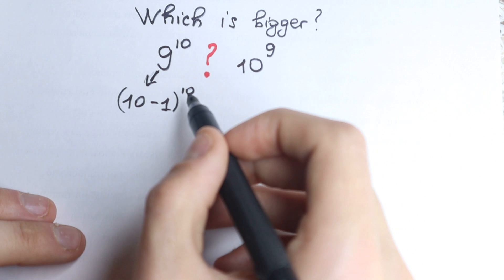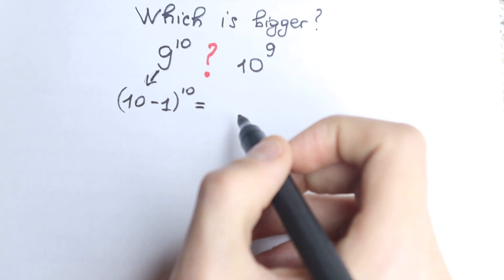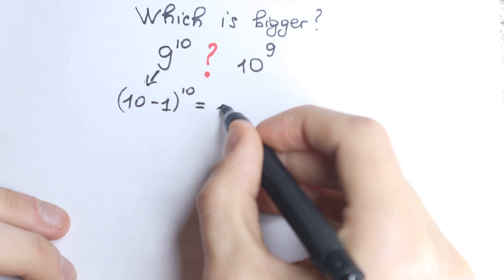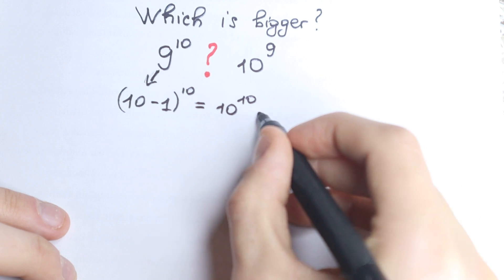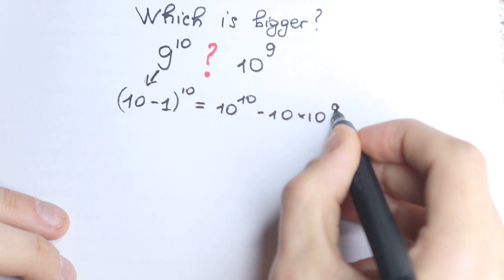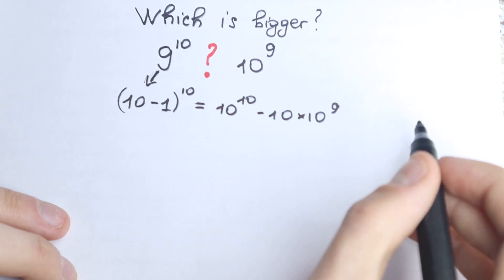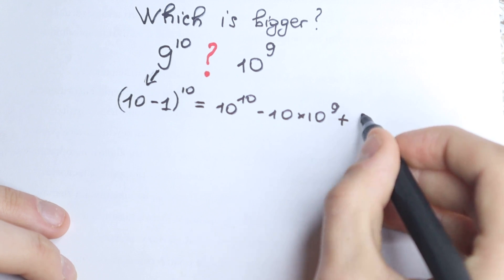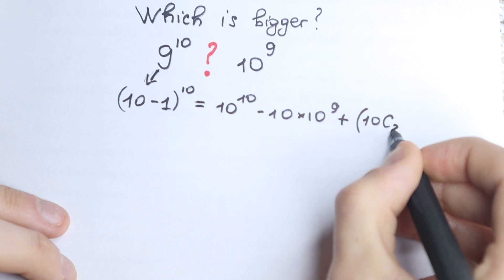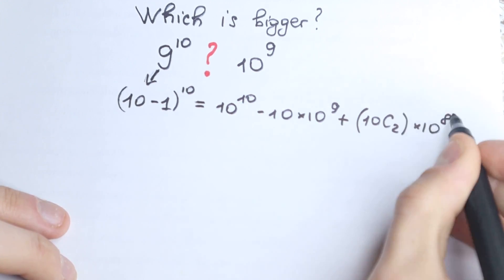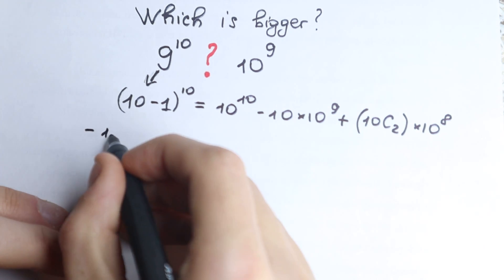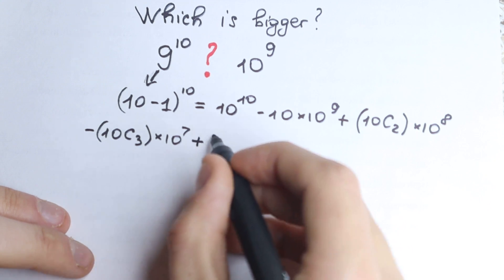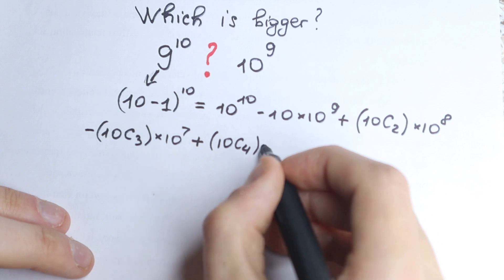Now let's try to expand this to the 10th power using the binomial theorem. I don't want to find all elements — I want to start from the beginning with just a few, maybe three or four terms. The first term is 10 to the 10th power, then minus 10 times 10 to the 9th power, then plus 10 times C(10,2) times 10 to the 8th power, then minus 10 times C(10,3) times 10 to the 7th power, plus C(10,4) times 10 to the 6th power.